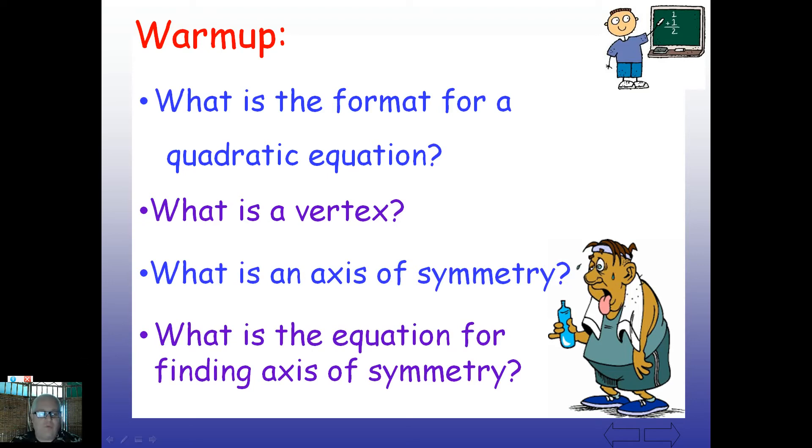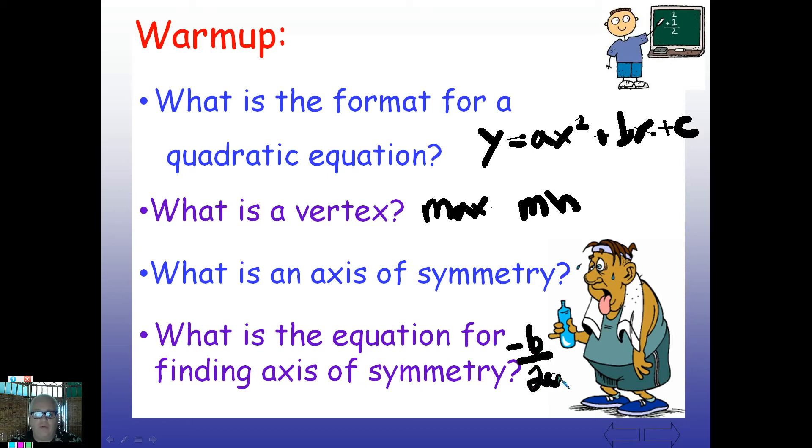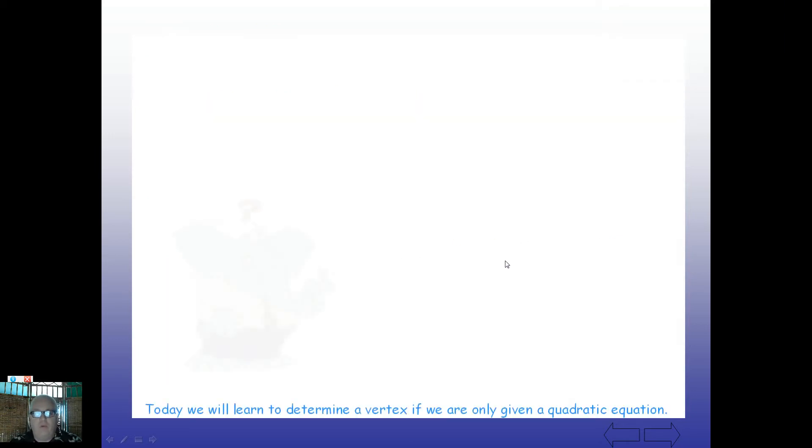The format for a quadratic equation is y equals ax squared plus bx plus c. The vertex is a maximum or minimum point of a parabolic function. What's an axis of symmetry? This is that line that cuts the parabolic shape directly in half. And what is the equation? We can use negative b over 2a. These things are in your notes from our previous time together.